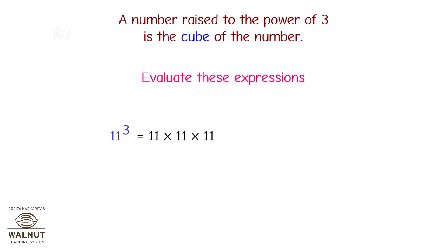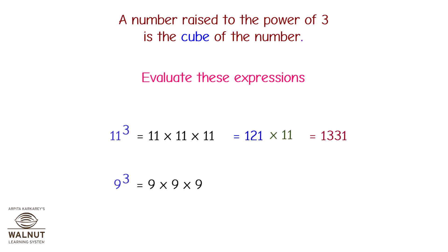11 cube is equal to 11 into 11 into 11. So first, 11 into 11 is equal to 121, and 121 into 11 is equal to 1331. Hence, 11 cube is equal to 1331. 9 cube is equal to 9 into 9 into 9. So first, 9 into 9 is equal to 81, and 81 into 9 is equal to 729. Therefore, 9 cube is equal to 729.